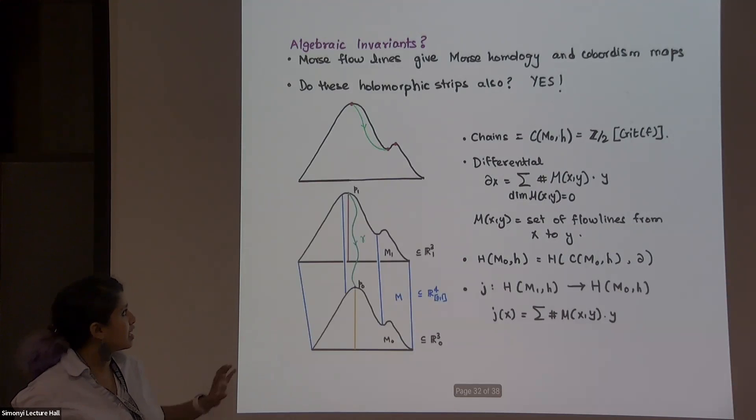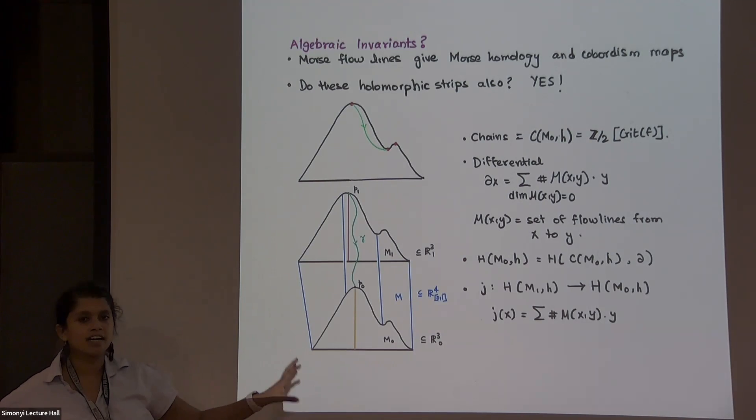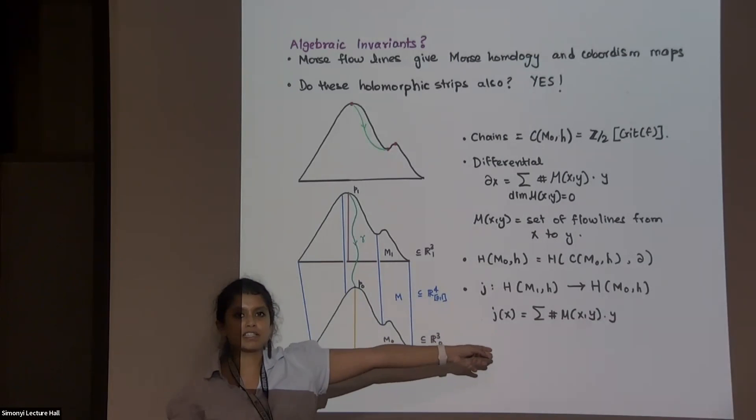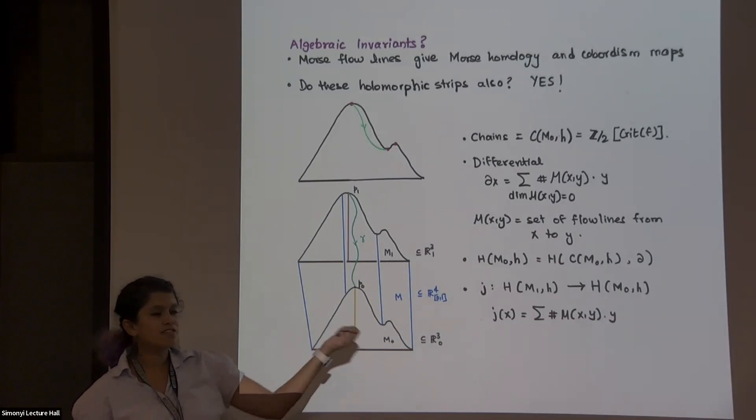And the differential is obtained by counting how many flowlines exist. So you take an x suppose it's the peak, and the coefficient of y in the differential will be the number of flowlines that go from x to y. I'm saying number. So you only take those y's for which the set of flowlines is zero dimensional. So you can do counting. And if you set that up, it actually becomes a differential. You could do some work to show that, and then you can take the homology. It's a nice invariant.